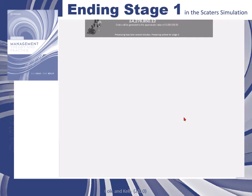Once all of the data has been generated — and this will be offered to you later for analysis — a button will appear in the processing form and you will click this to progress into stage two. As we can see from the video, approximately five million pounds was generated as revenue in stage one for this simulation.